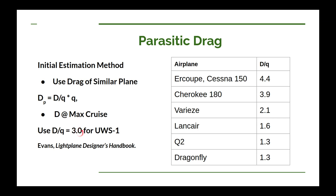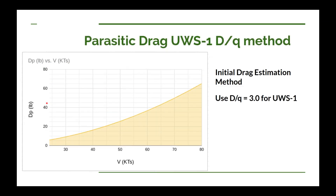We can use that D over Q value to calculate our parasitic drag. I used a spreadsheet to do that and came up with this graph. Down at stall we have very low parasitic drag — about 6 pounds — and up around cruise we have a little over 30 pounds of drag. As a first estimate to give an initial figure for the thrust we're going to need, I think this will work pretty well.